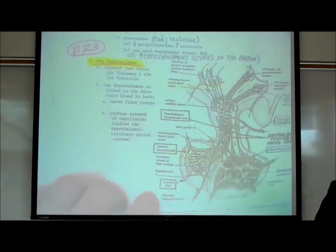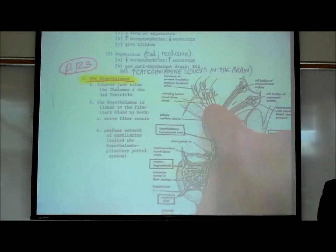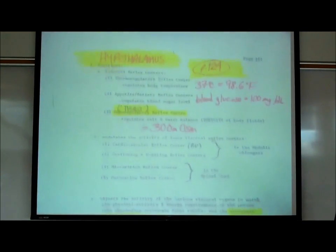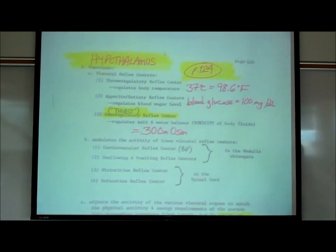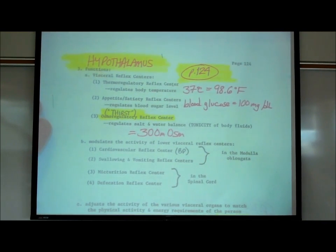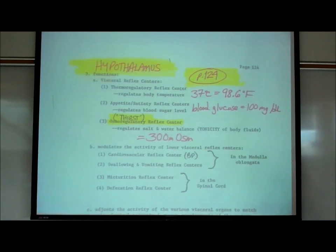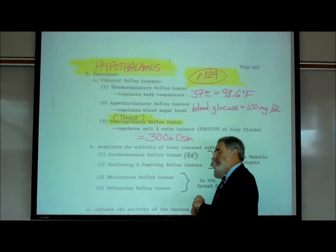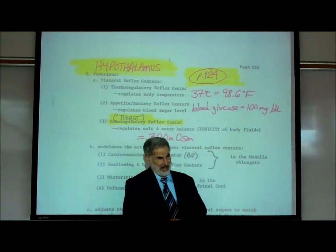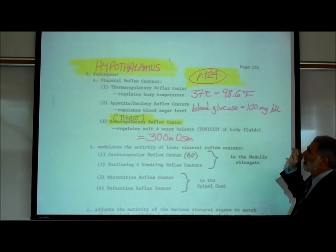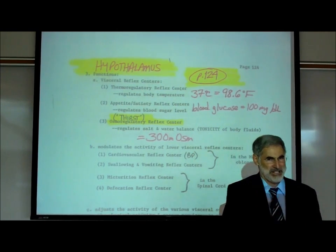What are some of the main functions of the hypothalamus of the brain? On page 124, there are some very important control centers, reflex centers. The first one is the thermoregulatory reflex center.